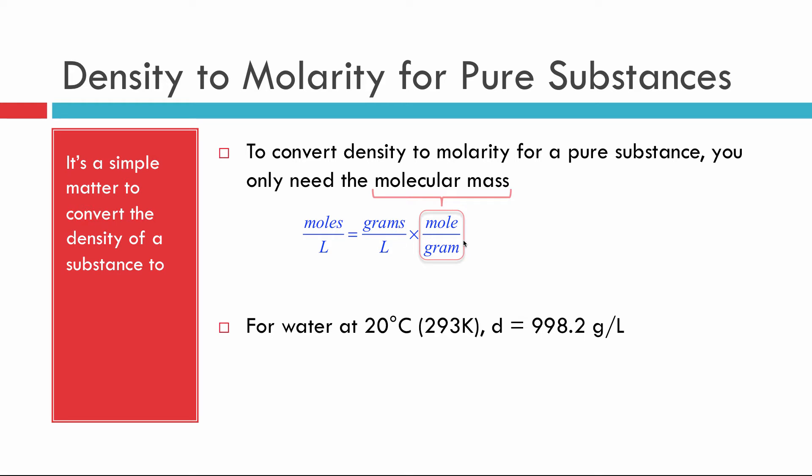All right. So, for example, water at 20 degrees C has a density of 998.2 grams per liter. So, if I take that into account, I find that the concentration of water is 55.39 moles of water per liter of water. Do you get that last bit? It's the moles of water per liter of water.